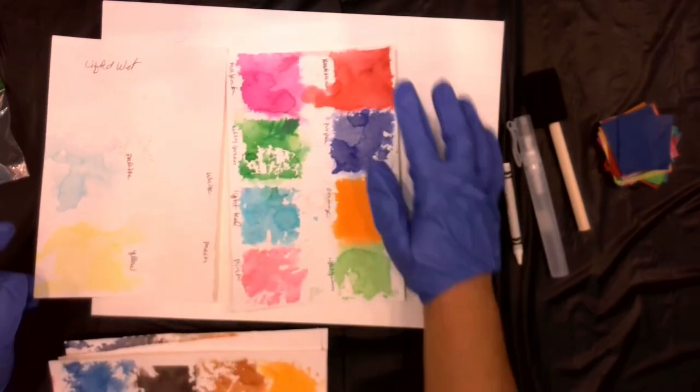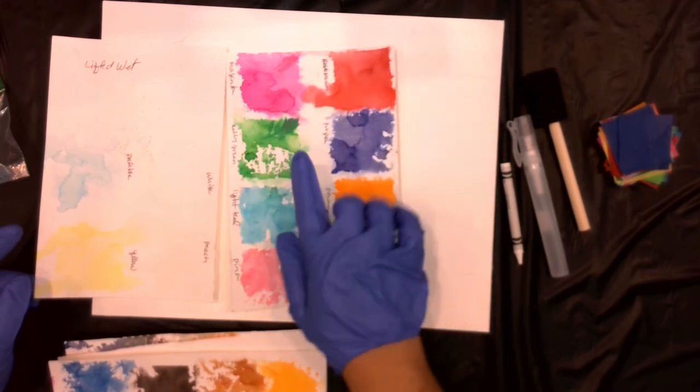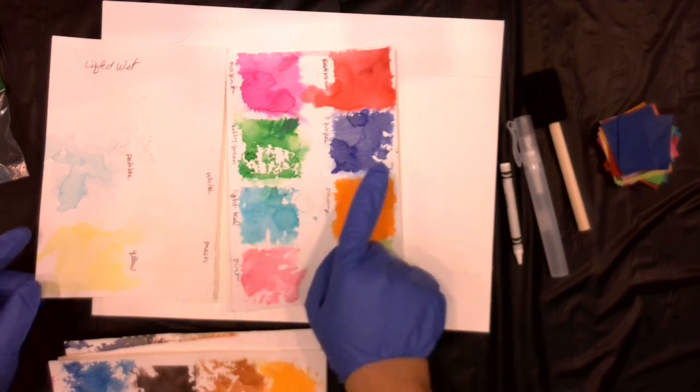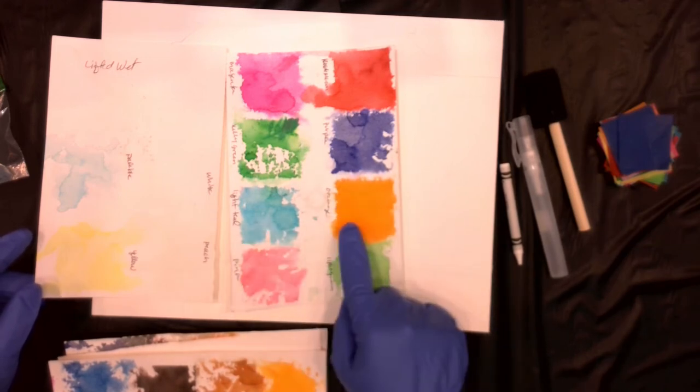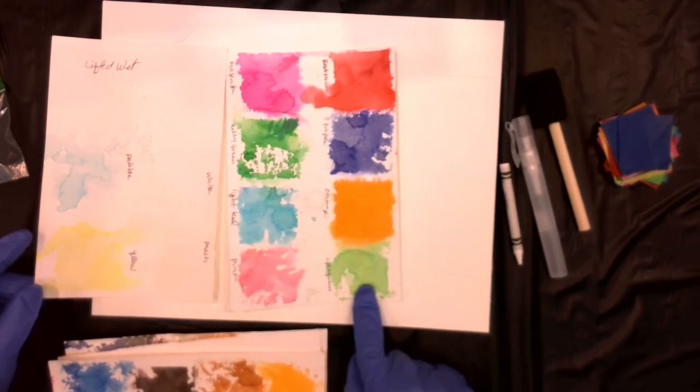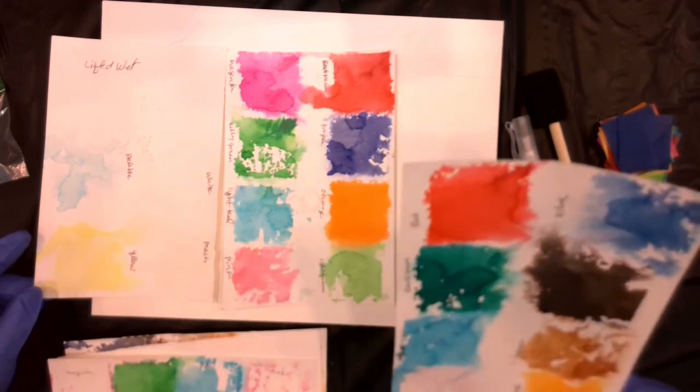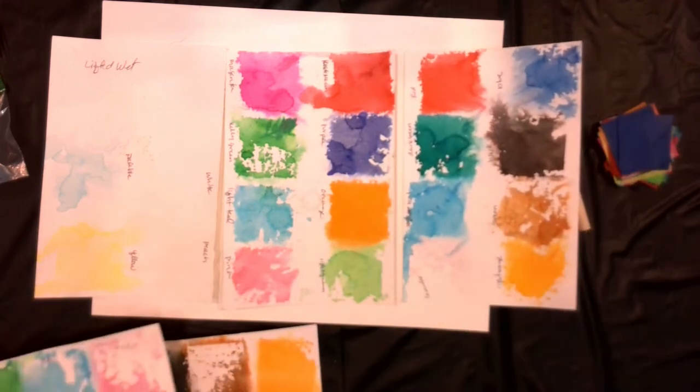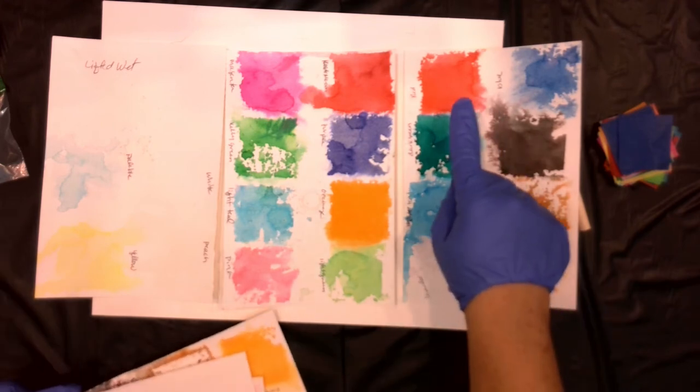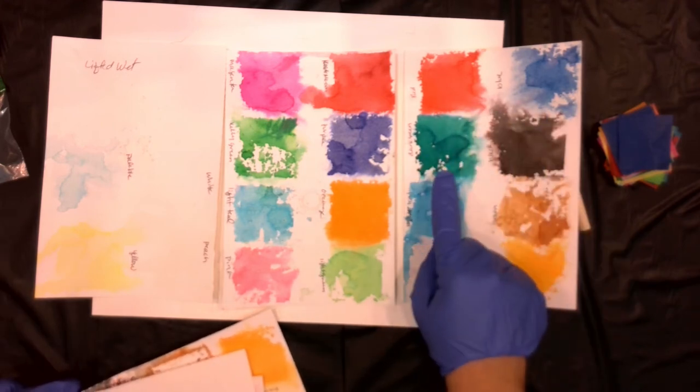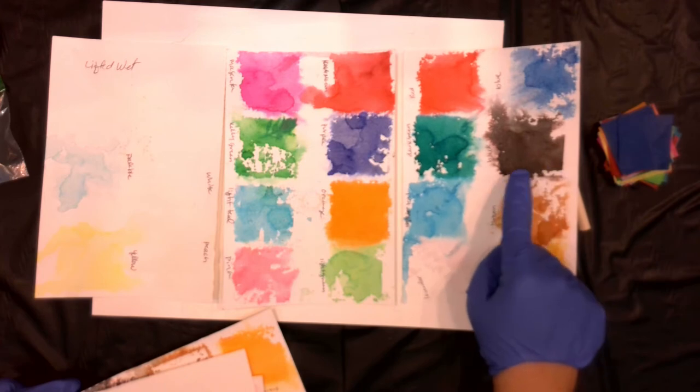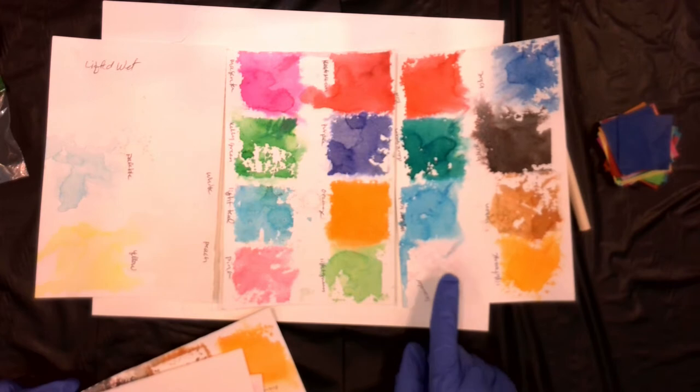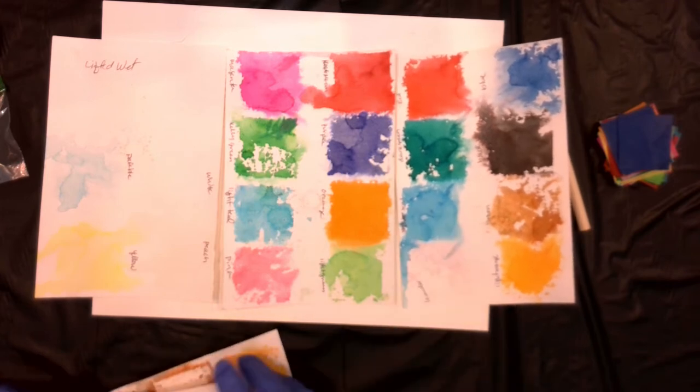Also lifting when wet we've got the maroon color, magenta, the kelly green, kind of the purple color, or indigo maybe, a lighter teal, the orange, pink, lime green, and then the last of the colors here are the red, blue, the darker green, this one is actually the black, brown, the lighter orange, there's a lavender, and then the darker teal color.